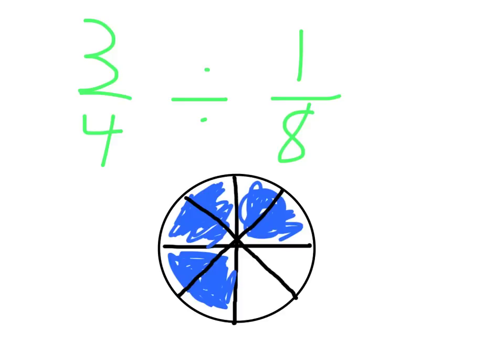Now, to divide that by one-eighth, I need to see how many eighths there are in those three-fourths. So I drew these extra two lines, and now we've carved the pizza into eight slices.